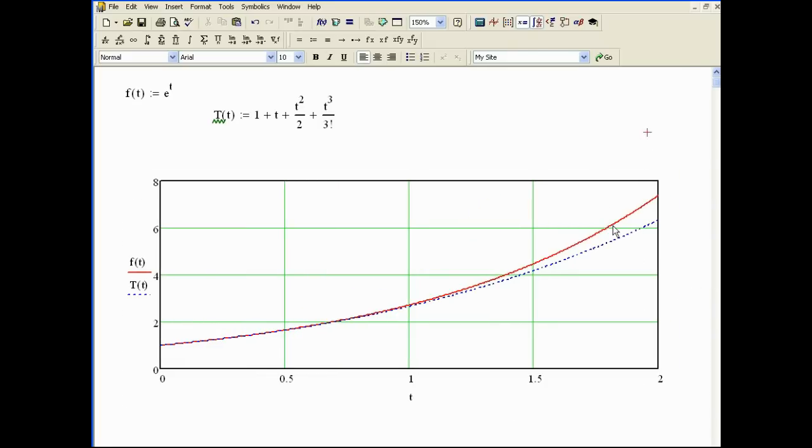And you can see the red line is the exact function, e to the t. And the blue dotted line here is the approximate function. As you get up to 2, it starts to diverge a little bit. This is actually a McLaurin series, which is a Taylor series expanded about 0. So you can see as we get farther and farther from 0, the error increases.